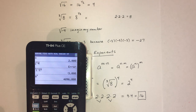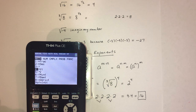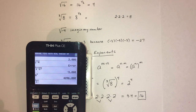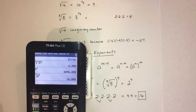So if you enter the cube root of 8 raised to the 4th in the calculator, the answer is 16.